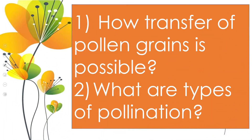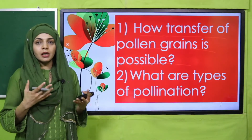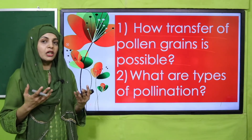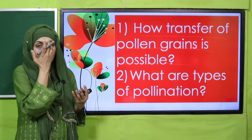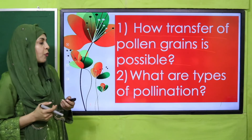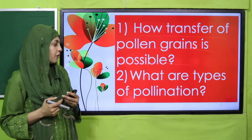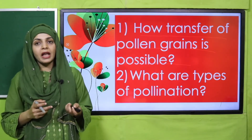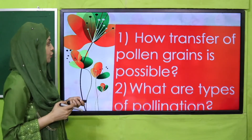Now it is time for evaluation. How is transfer of pollen grains possible? It can be by self-pollination or cross-pollination. What are the types of pollination? Cross-pollination and self-pollination.